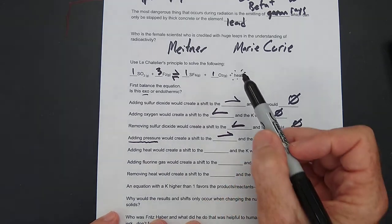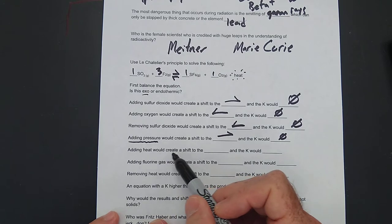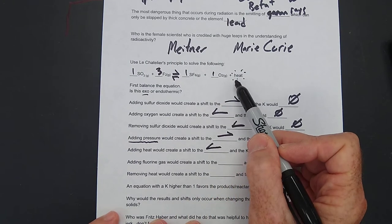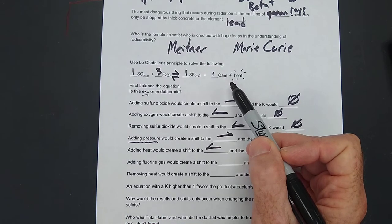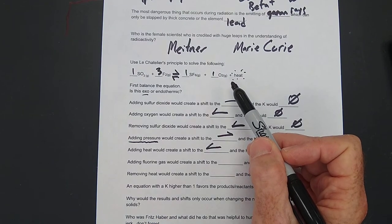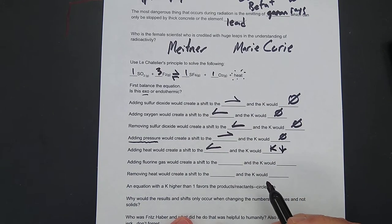Adding heat. All right. This is exothermic. Adding heat would create a shift to the left. This thing needs to be able to give off heat. It's like your car engine. If you put it in a hot place, it can't run very well. And the K would go down. Okay.